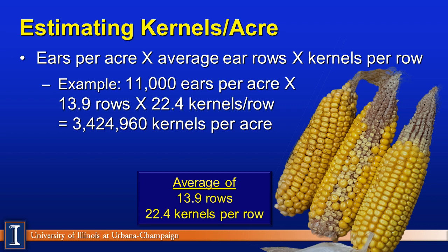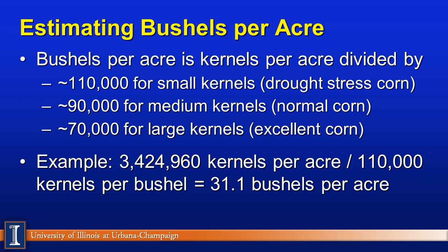Normally, rows per ear would be 12, 14, 16, or even 18, but remember we're going to average. We counted 22.4 kernels per row in our example. For that last U of I corn we showed you, we estimated about 2 kernels per row and 16 rows. So you can see that's not a real buster of a corn yield. We end up with this calculation being about 3.5 million kernels per acre.